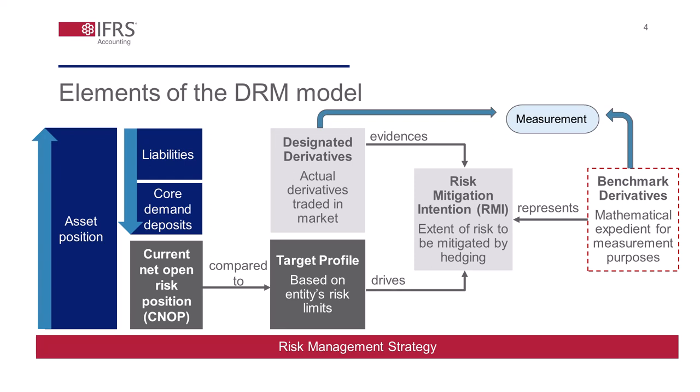Finally, the benchmark derivatives represent the risk mitigation intention and they are constructed by the entity based on the risk exposure it intends to mitigate. As such, benchmark derivatives are mathematical expedients to enable fair value measurement of the risk mitigation intention. It is important to note that those key elements are measured in risk terms, for example PV01. An entity would then calculate and compare the fair value changes in the benchmark derivatives and the designated derivatives in order to determine the effect of the dynamic risk management for financial reporting purposes and calculate the DRM adjustment accordingly. This is just a high-level overview of the elements of the DRM model constituting the risk view of an entity. Please follow the links to the individual webcasts for a more detailed explanation about the requirements and assumptions inherent in each of those elements, as well as the mechanics on the measurement. Thank you.